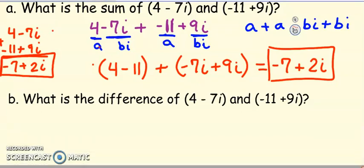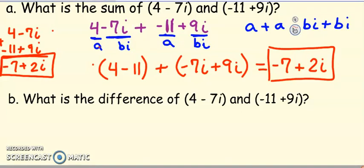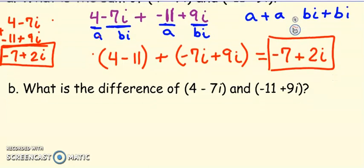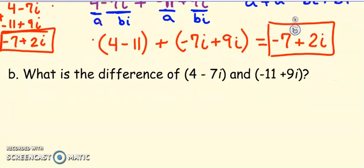All right. So let's go to the difference now, subtracting them. And so if we subtract them, it means we're using the same two. We haven't changed anything. But this time, I'm going to rewrite it. It says, what is the difference of (4 - 7i) and (-11 + 9i)? Difference, we know, means subtraction. I'm sorry, I skipped a step. I said it, but I didn't write it down. So subtraction.